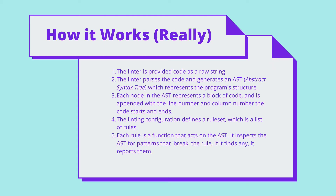How does linting actually work? Firstly, the linter is provided the code as a raw string. It parses the string and generates a tree-like structure called an abstract syntax tree, which represents the program's structure. It's like a binary search tree but with more than two nodes. Each node in the tree represents a block of code, and also contains information about the line and column number where the code starts and ends. The linting configuration has a list of rules called a rule set. Each rule is a function that takes in the AST — the tree-like structure — and inspects it for patterns that break the rule. If it finds any, it reports them, plus where they started and ended.